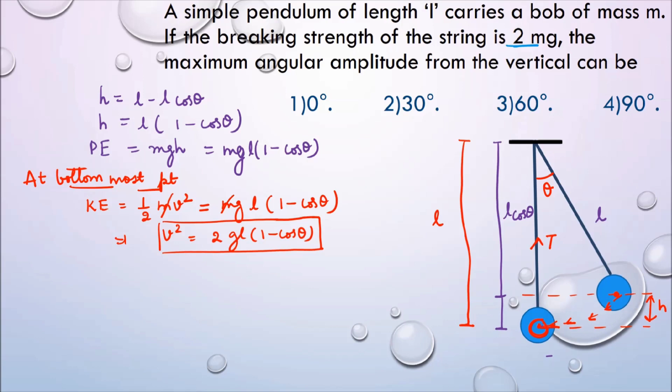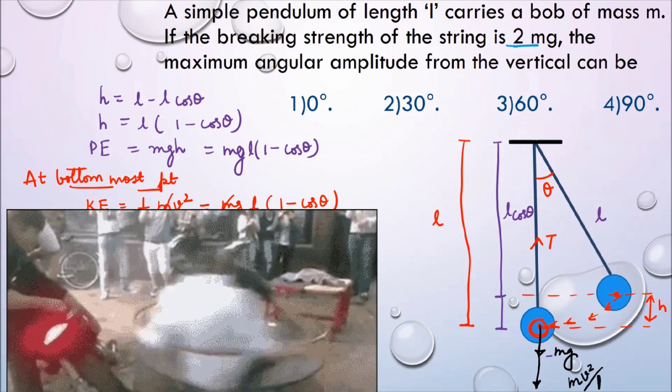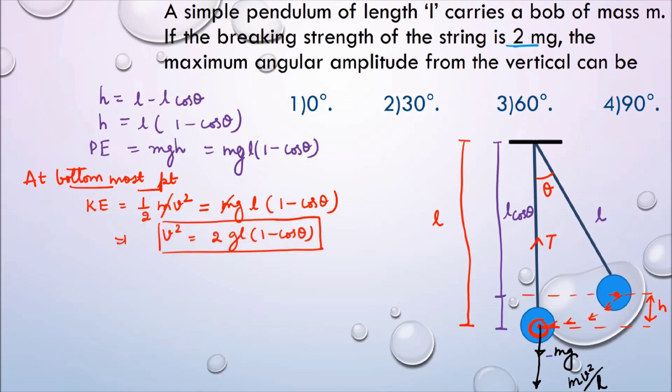So the tension experienced by the string is maximum where and when the bob is at the bottom most point. What are the forces experienced by the bob at the bottom most position? Number one is its weight which is due to its gravitational force. And since it is partially moving in a vertical circular motion, it will experience a centrifugal force which is equal to mv²/r, and here r is the length of the pendulum. So the tension at the bottom most point, I will write it as T, is equal to mg plus mv²/r.